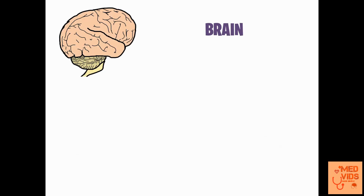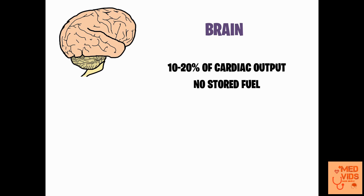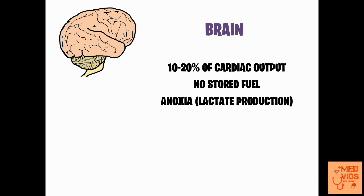The brain requires about 10 to 20 percent of the cardiac output, which is quite huge for its small size. The brain has no stored fuel, so it must be constantly supplied with glucose. In cases of anoxia, where there is a cutoff of oxygen supply to the brain, there will be production of lactate by anaerobic glycolysis, with a sudden increase in lactate production to supply energy to the brain.